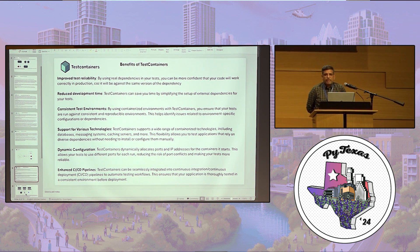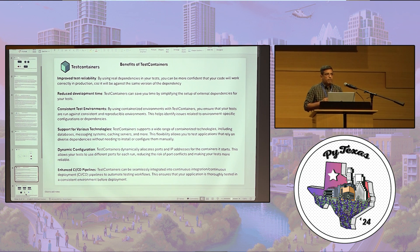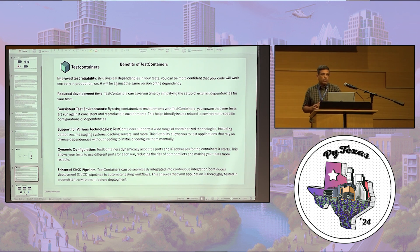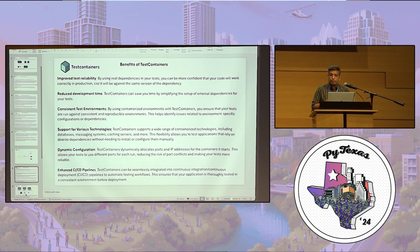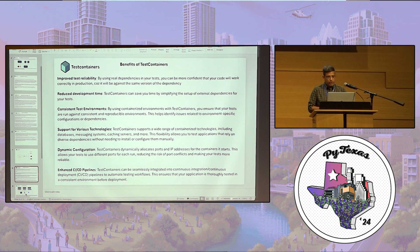Now, some key benefits. First, dynamic configuration: when we write Docker Compose, we have to specify what port a certain system runs on. Testcontainers takes care of dynamic configuration on its own — it dynamically allocates the IP and port. All we do is spin up the API and containers are provided to us.